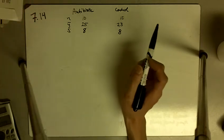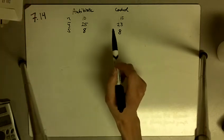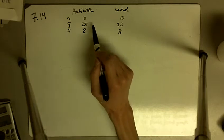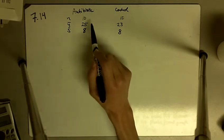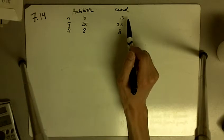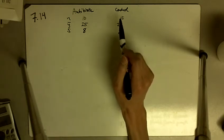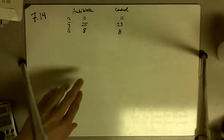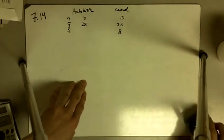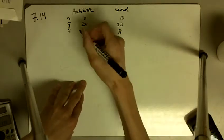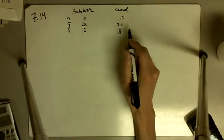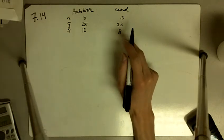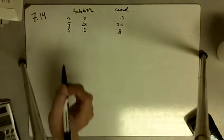Of the 10 rats treated with the antibiotic, the sample average was 25 seconds, and for the 10 control rats the sample average was 23 seconds. The standard deviation for the antibiotic group was 10 seconds, and the standard deviation for the control group was 8 seconds.